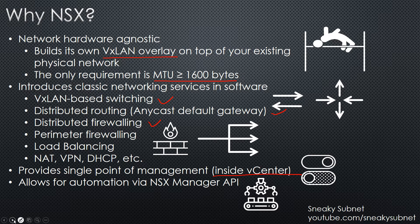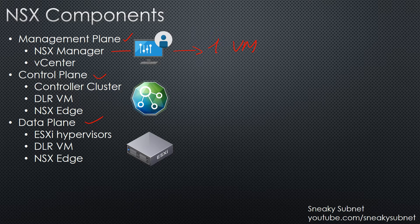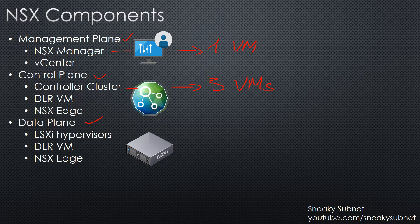Now let's move on to NSX components. NSX consists of three planes: management plane, control plane, and data plane. The management plane consists of NSX Manager and vCenter. NSX Manager is a single VM. The control plane consists of a controller cluster, DLR VM, and NSX Edge VM. The controller cluster requires three VMs at minimum. Since it represents a truly distributed system, three nodes not only increase high availability but also performance leveraging slicing technology. The controller cluster is responsible for managing the hypervisor switching and routing modules. Although it is a control plane component, it can directly affect your data plane in case of a complete failure.